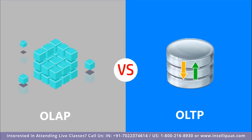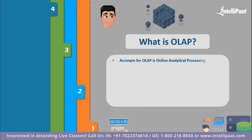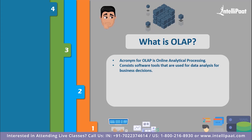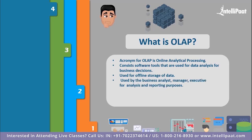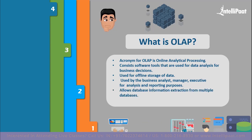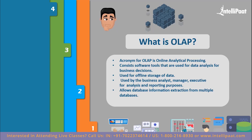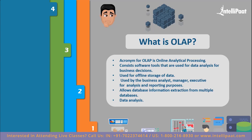Let us start off by understanding both of these technologies briefly. What exactly is OLAP? The acronym for OLAP is Online Analytical Processing. It consists of software tools used for data analysis in order to make business decisions. It is majorly used for offline storage of data, and the database information stored is used by business analysts like managers and executives for analysis and reporting purposes. Using OLAP, you can extract database information from multiple databases and analyze it for decision making at one time.